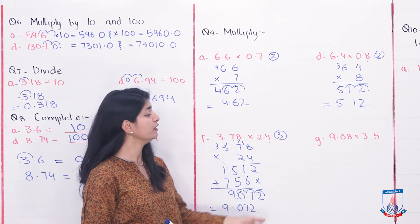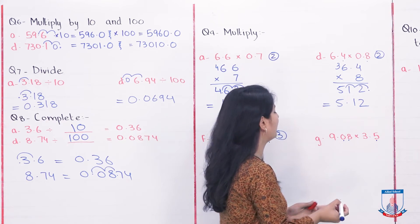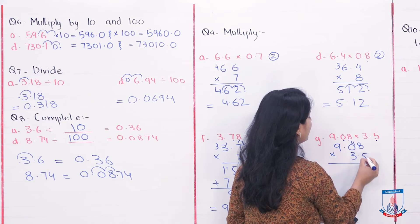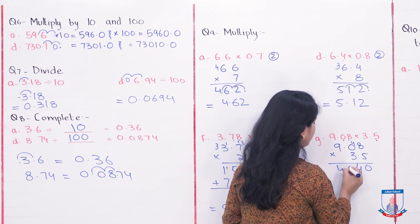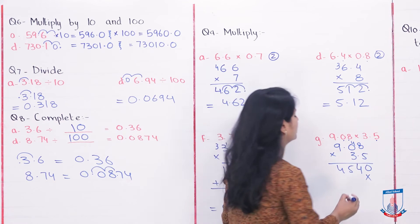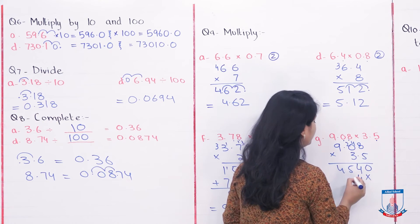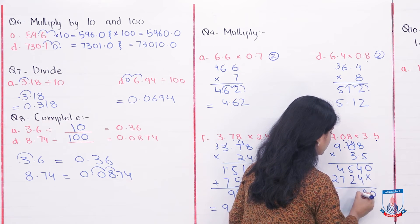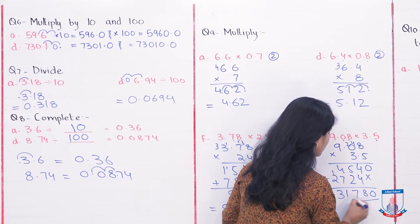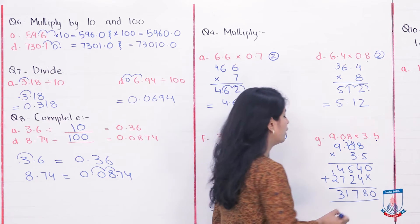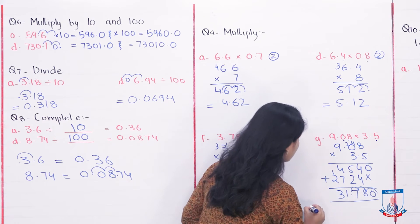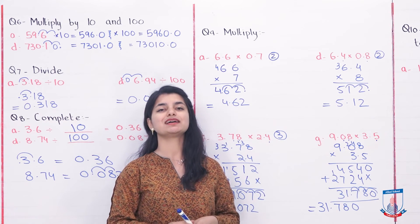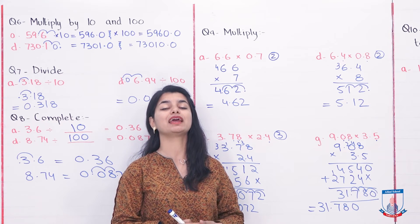Similarly, part G. If we look at this part, there are 3 decimal places. 9.08 into 3.5. 5 eights are 40, 4 carry. 5 zeros are 0 plus 4 is 4. 5 nines are 45. Then cross: 3 eights are 24, 2 carry. 3 zeros are 0 plus 2 is 2. 3 nines are 27. Adding them: 0, 8, 7 — 7 plus 4 is 11, 1 carry 3. So your answer is 31780. Then, we will go 3 decimals back, and we will have 31.780, or 31.78 — both are the same thing. Question number 9 has been practiced for you; the rest are for you to solve.